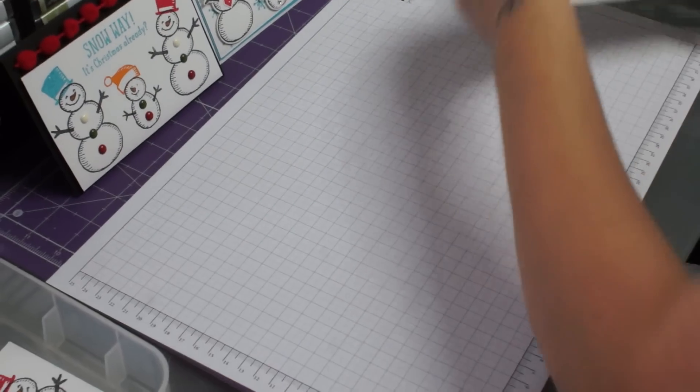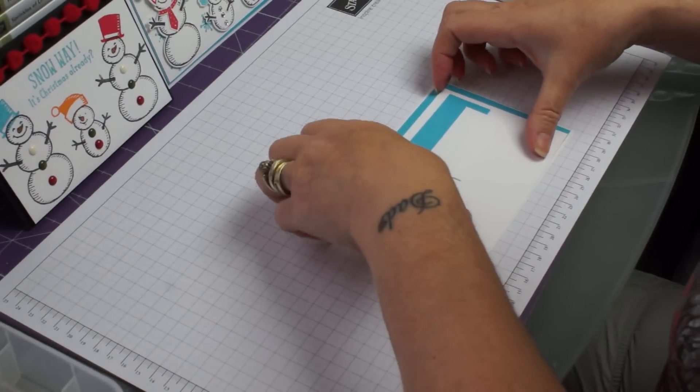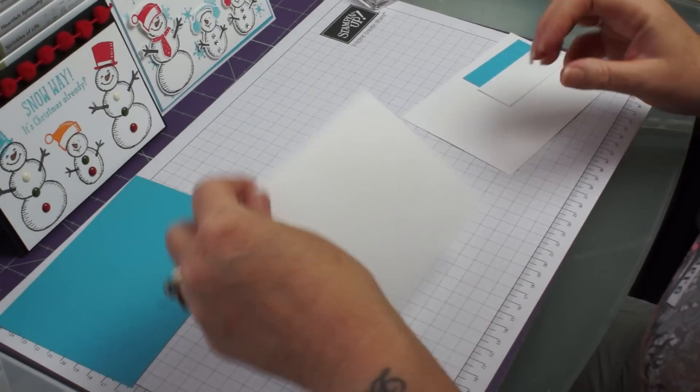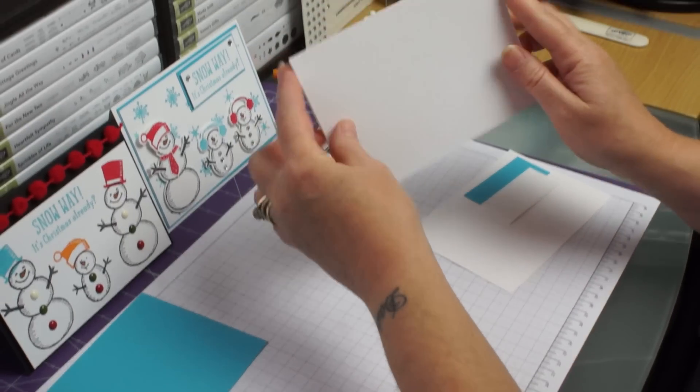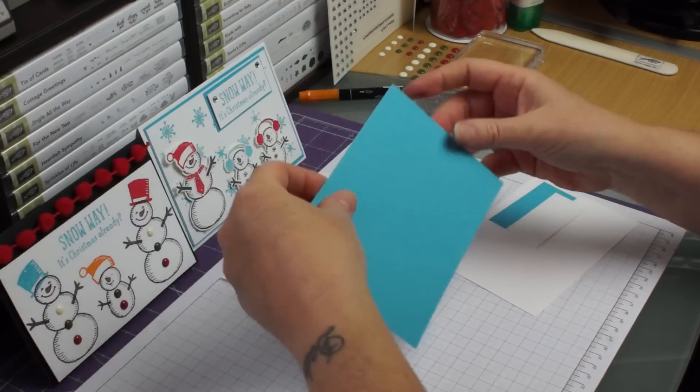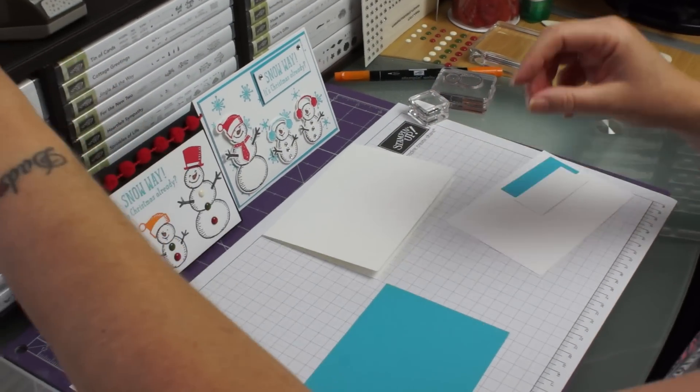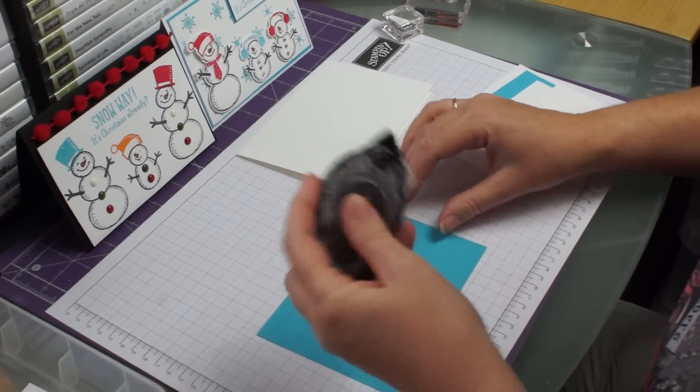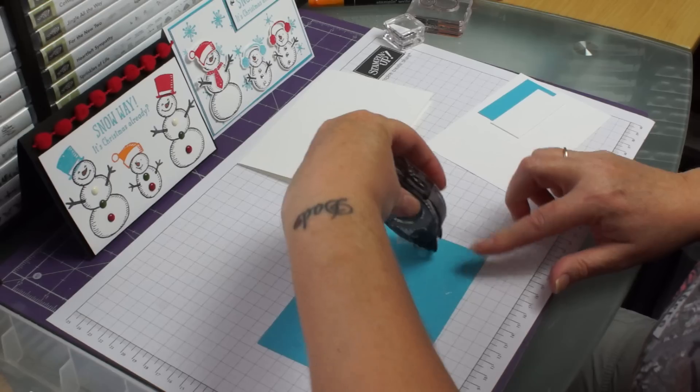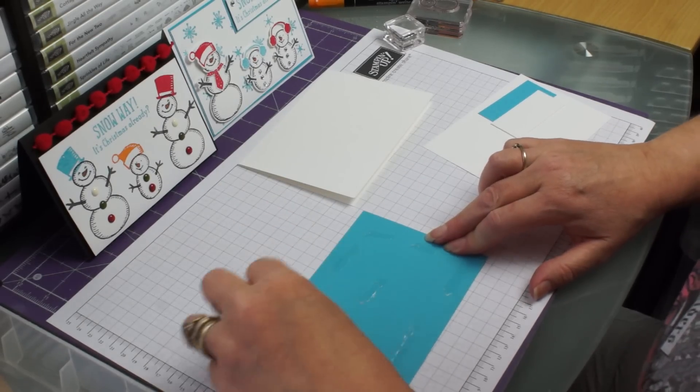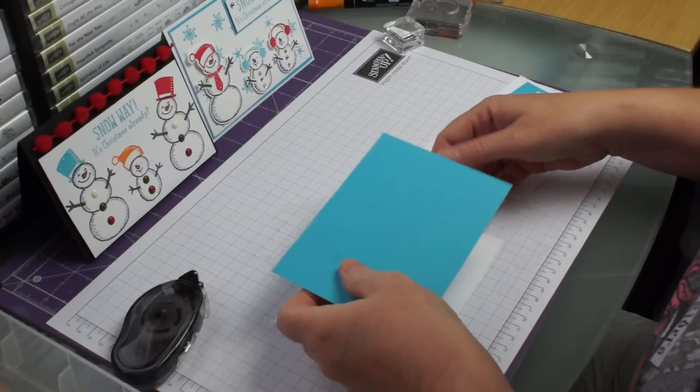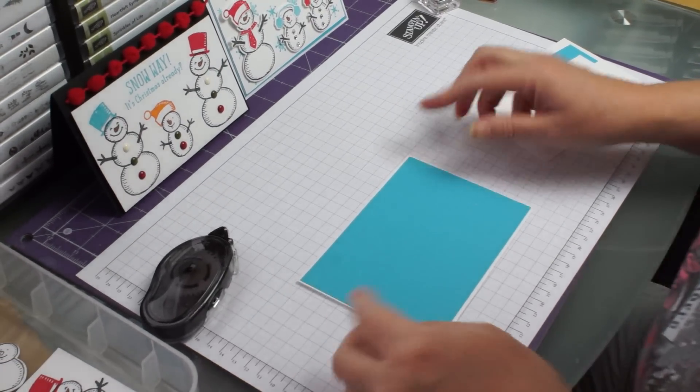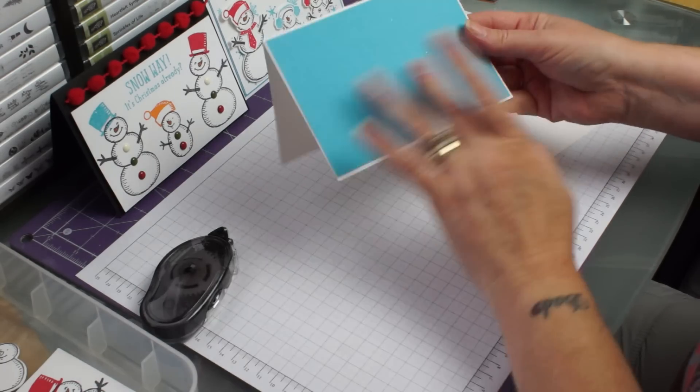So first of all I would get my ink. Your A6 Whisper White card. A piece of tempting turquoise. And I would just pop that on there. So that's our background piece done.